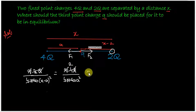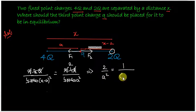What we are left with is 2 upon a² equals 1 upon (x minus a)².